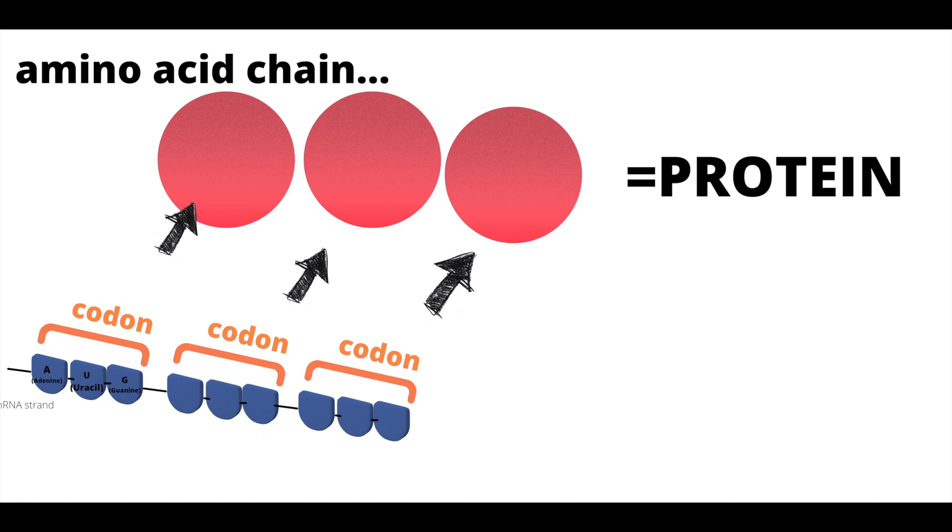Make sure you know the general idea of transcription and translation, which comes first (transcription, then translation), and which RNAs are involved. mRNA is involved in transcription; mRNA, tRNA, and rRNA are involved in translation. Remember that protein synthesis happens inside ribosomes.